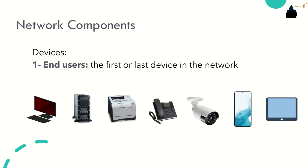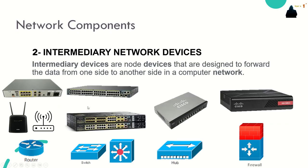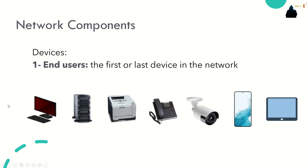A network device is the source or destination of a message transmitted through the network. To distinguish one terminal from another, each terminal in the network is identified by an address, like your home address. When a terminal establishes a connection, it uses the address of the destination terminal to specify where the message should be sent. Examples include computers, workstations, laptops, file servers, web servers, and Windows servers.